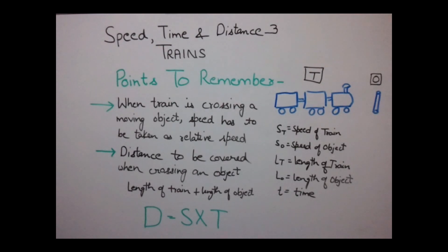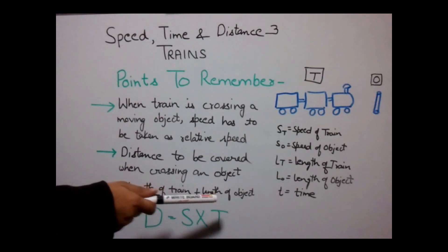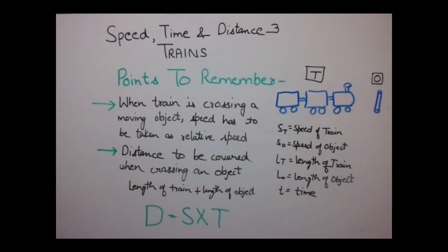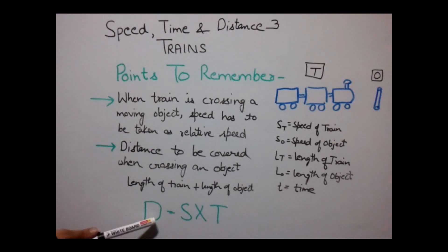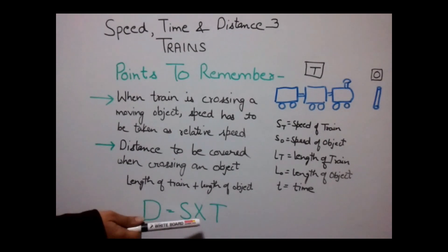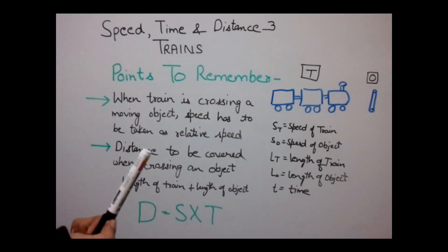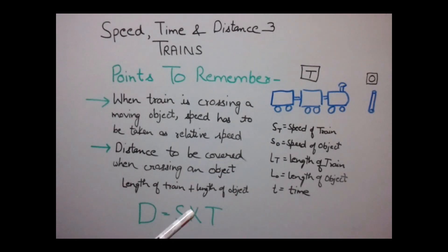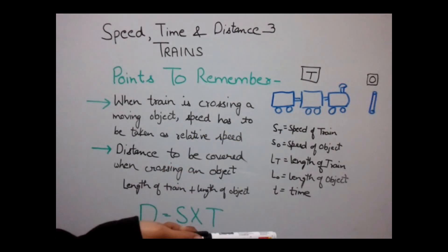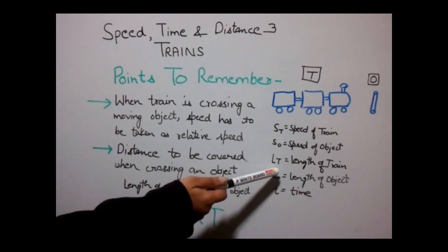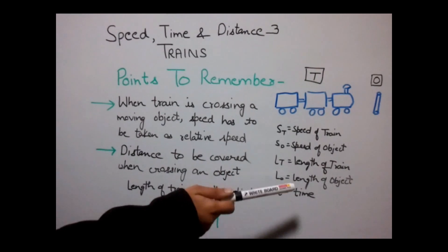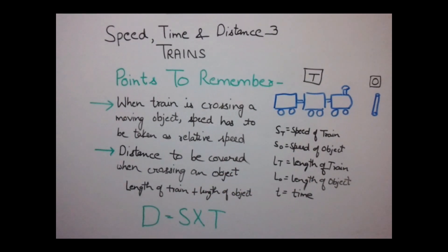The second point is that the distance to be covered when crossing an object would be the length of the train plus the length of the object. The basic formula from which various formulas will be derived is D equals speed into time. The variables we will use are: ST for speed of train, SO for speed of object, LT for length of train, LO for length of object, and T for time.